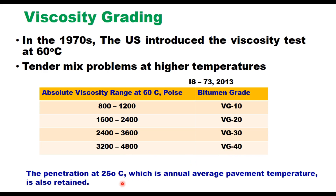The penetration at 25°C, which is the annual average pavement temperature, is also retained in IS 73:2013. VG 10 is widely used in spraying applications such as surface dressing and paving in very cold climates, in lieu of the old 80/100 penetration grade, and is used to manufacture bitumen emulsions and modified bitumen products. VG 20 is used for paving in cold climates and high-altitude regions. VG 30 is used to construct extra heavy-duty bitumen pavements, in lieu of 60/70 penetration grade. VG 40 is used in highly stressed areas such as intersections, toll booths, and truck parking lots, producing stiffer mixes to improve resistance to shoving under high temperatures and heavy traffic.